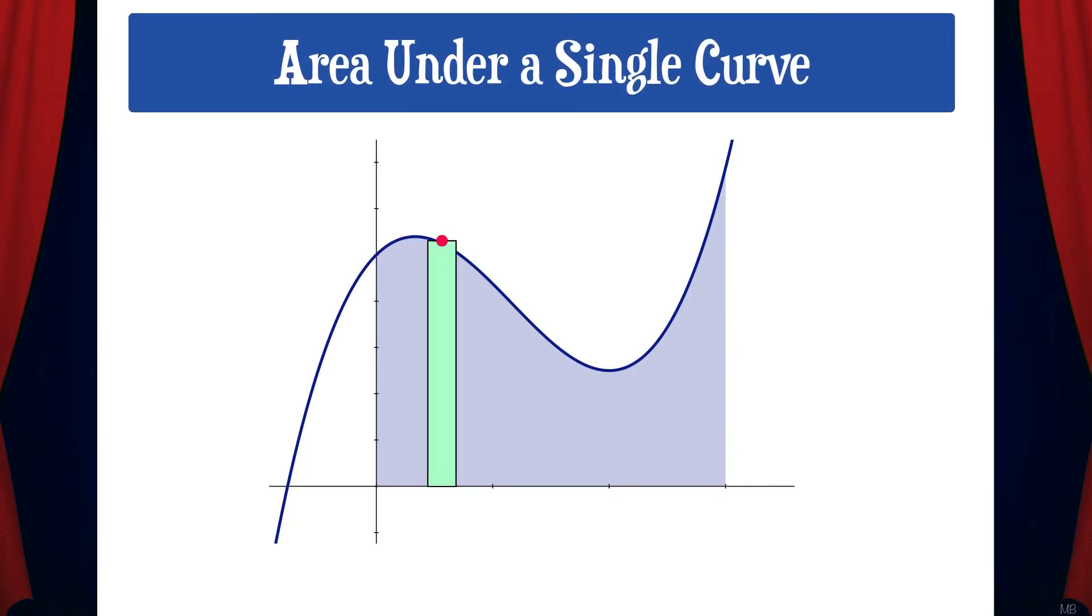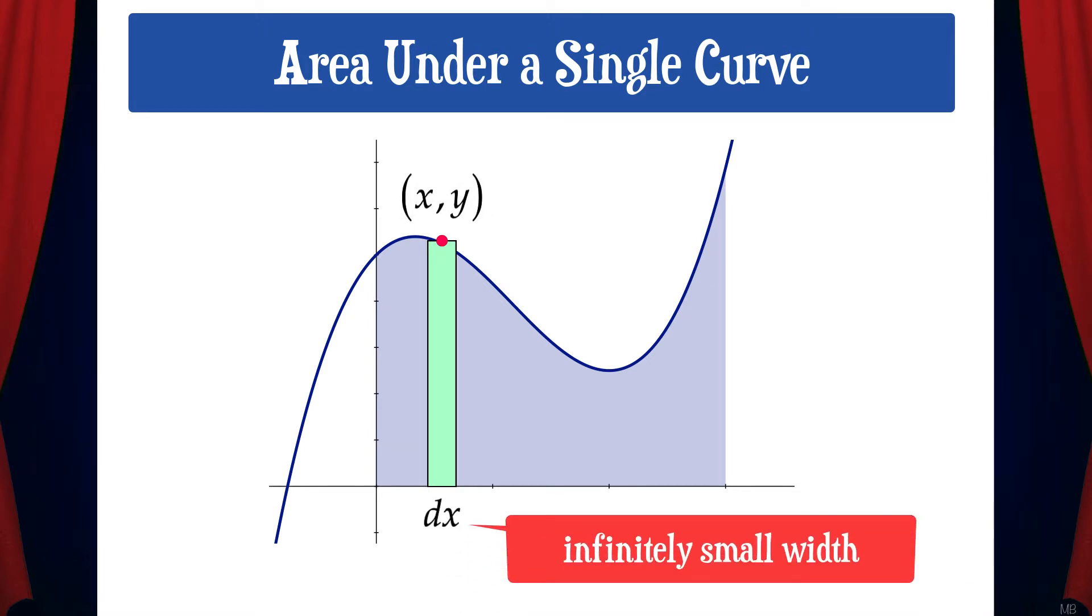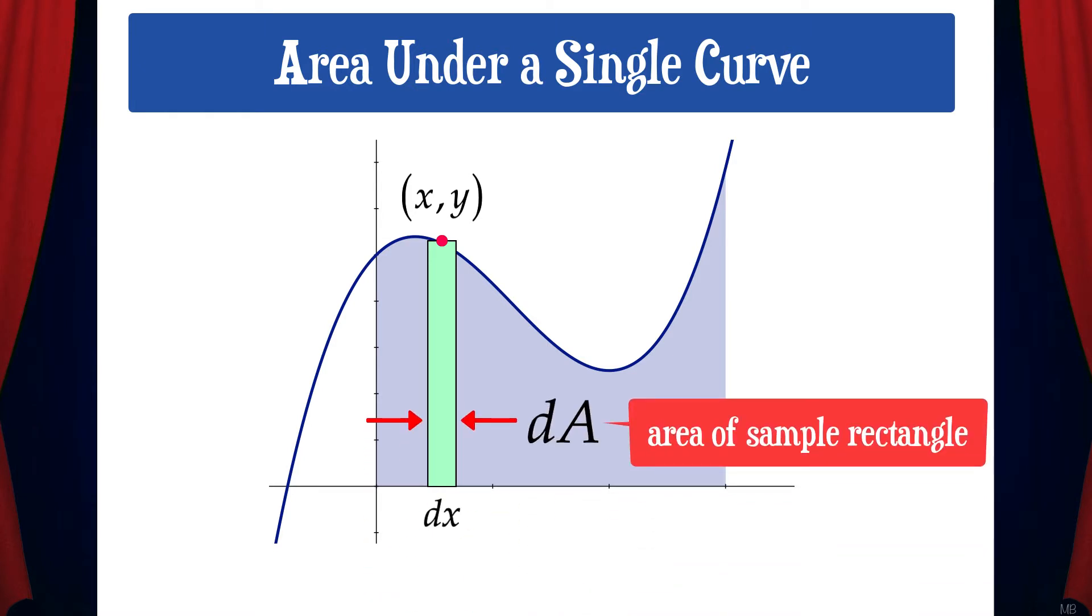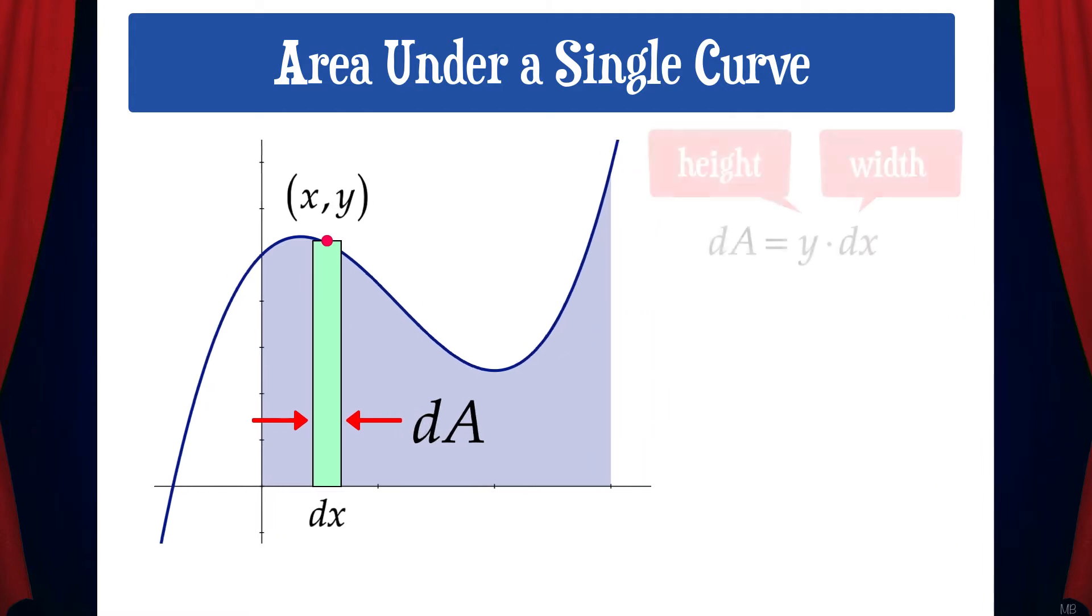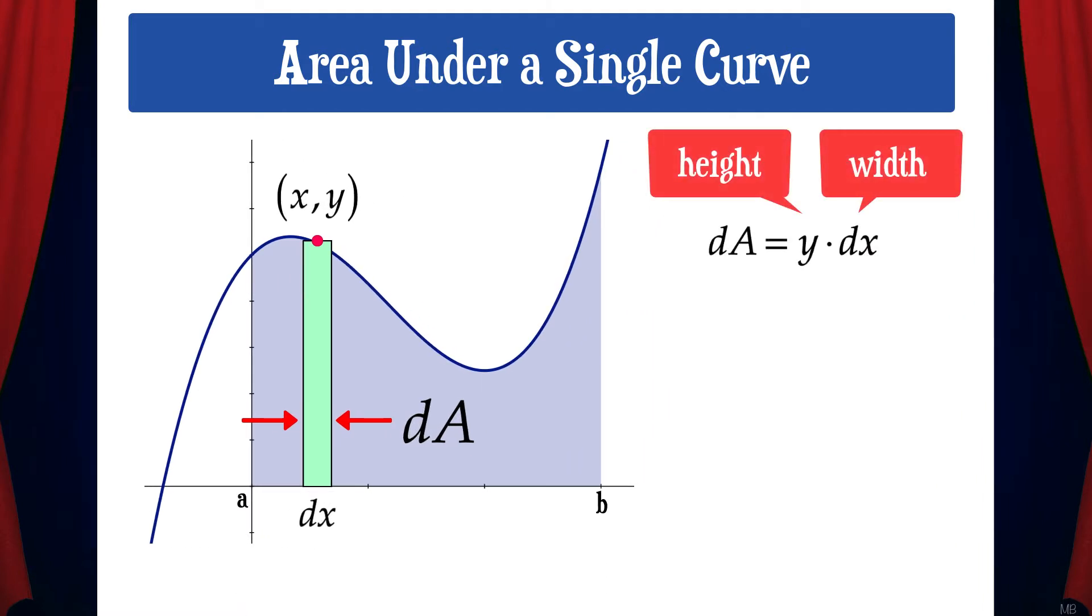To find the area under a single curve, we're adding up the areas of an infinite number of rectangles. Here I've drawn a rectangle at a sample point (x,y). Note that the width of the rectangle is dx, which is actually infinitely small. We'll call the area of this sample rectangle dA. The area of this rectangle is the height times the width. The height is just y and the width is dx.